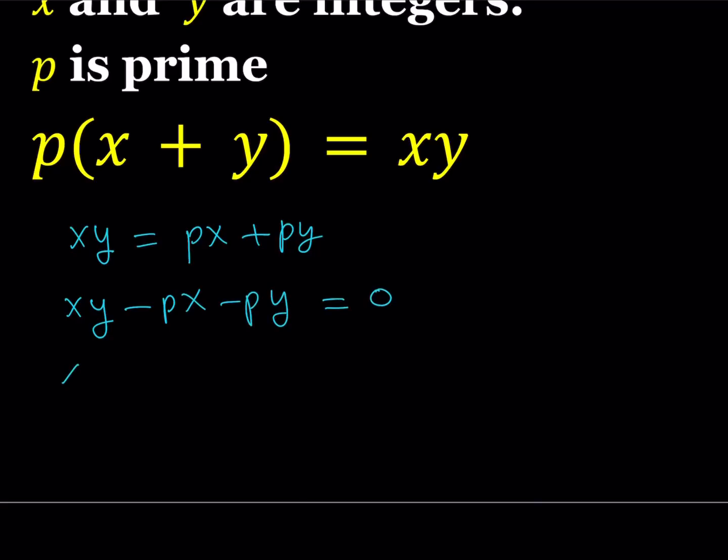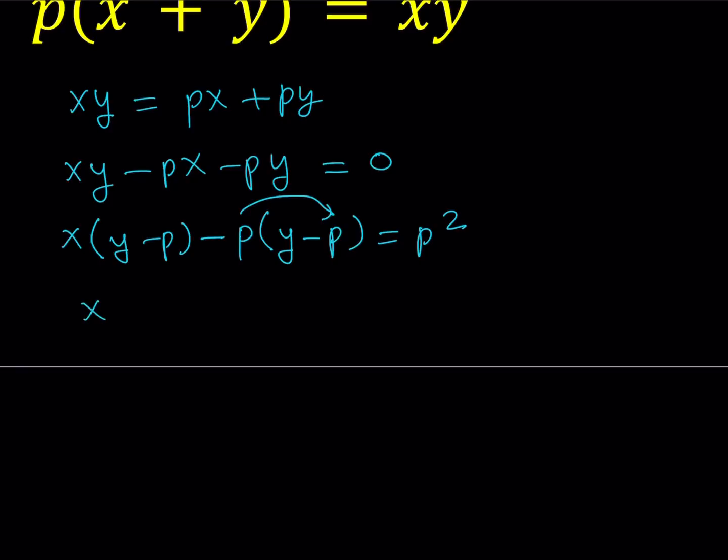So I'm going to take out X here, and then here I want to take out P, a negative P, but I do need Y minus P, which means I'm adding P squared to both sides. Make sense? Because if you distribute this, you're going to get negative P times negative P equals P squared. So we added P squared to both sides. And this makes it factorable, thanks to Simon. X minus P times Y minus P equals P squared.